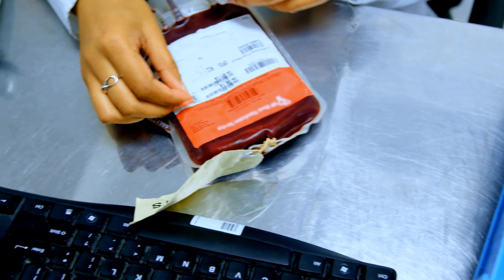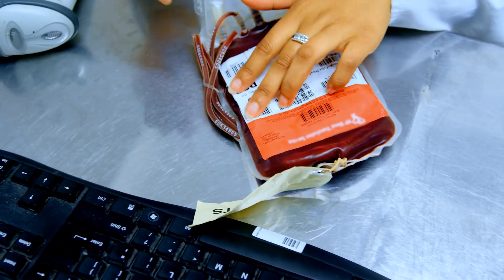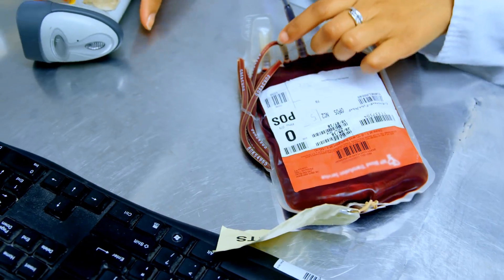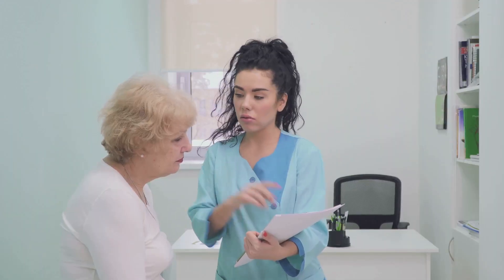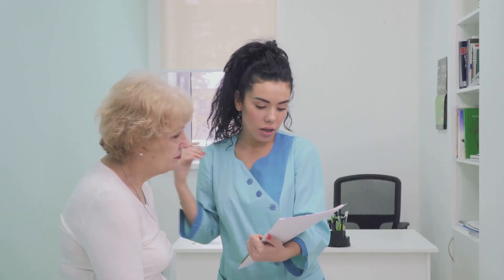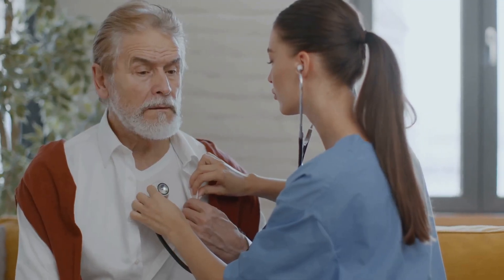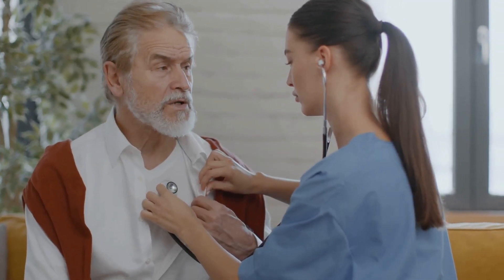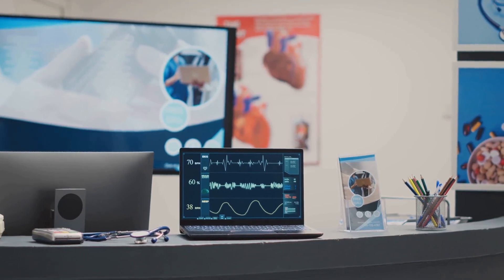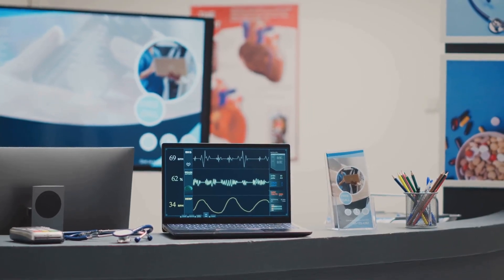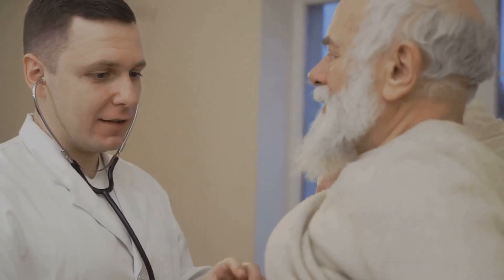So what do the results mean? NT-proBNP levels are measured in picograms per milliliter. Here's a general guideline: Normal levels are typically under 125 picograms per milliliter for people under 75 years old and under 450 picograms per milliliter for those over 75. Elevated levels above these thresholds may indicate heart failure, but other factors like age, kidney function, and overall health also play a role.